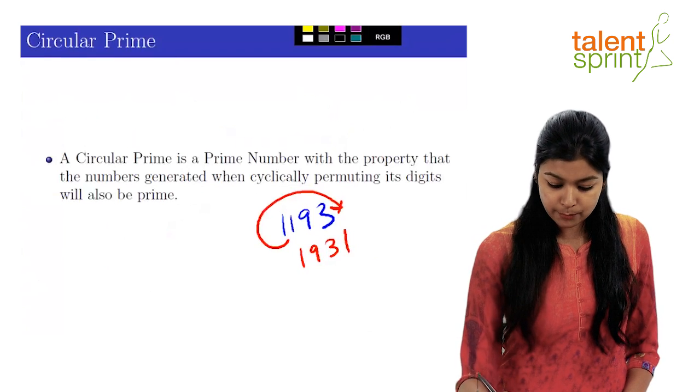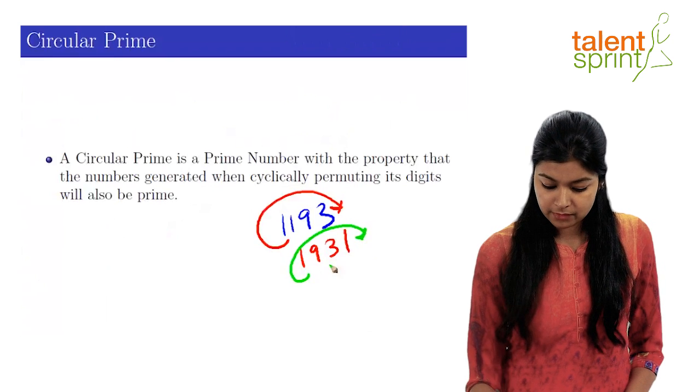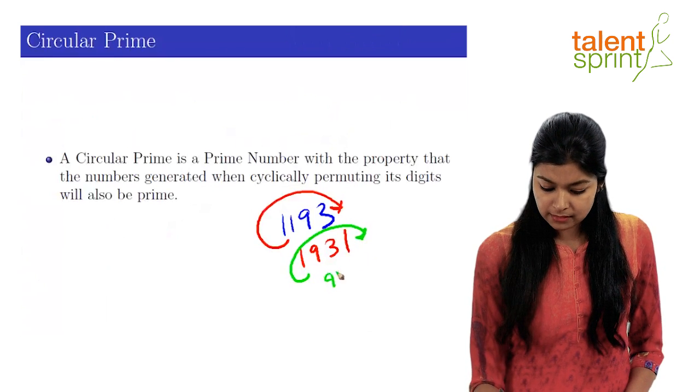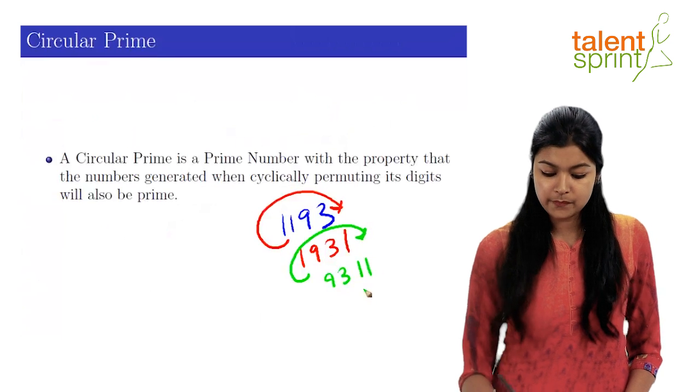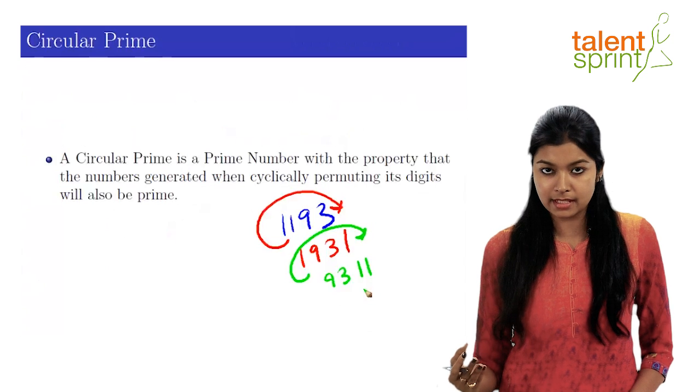Again, you repeat the same process. Take the first digit, add it to the end. So next number is 9311. Now 9311 again is a prime number. So we continue to the next iteration.